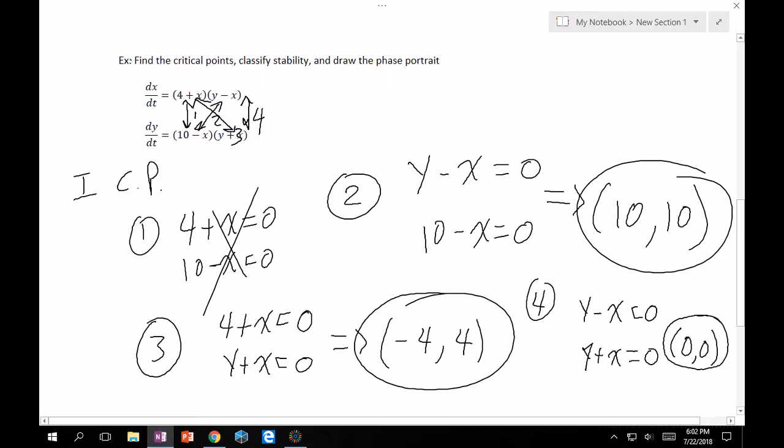A key thing I would recommend is that at the very beginning, it's not that I don't trust you doing product rule, it's just that during tests you make silly mistakes. I would recommend you just multiply this out. So expand it. This becomes 4x plus xy minus x squared and 10y plus 10x minus xy minus x squared. You're in a much better position to take partial derivatives from here.